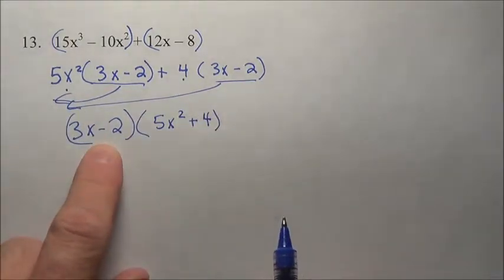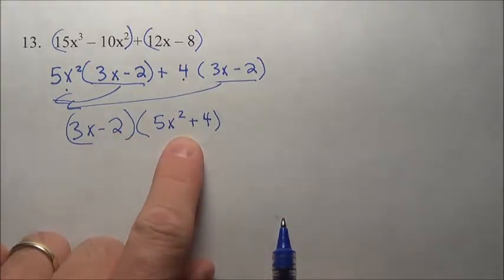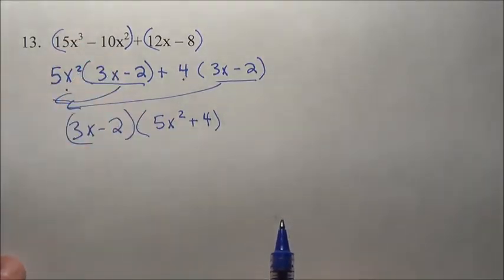This binomial times this binomial will create all that up top. That's how we factor something. Again, if you have four terms, right away you know it's got to be factor by grouping.